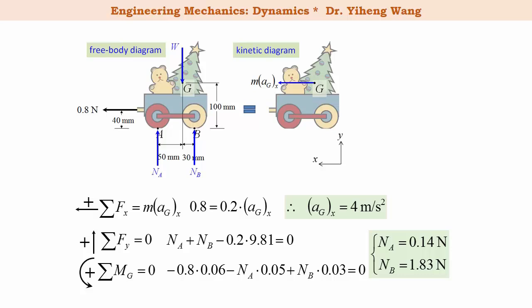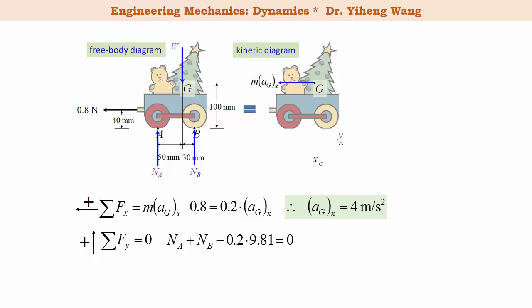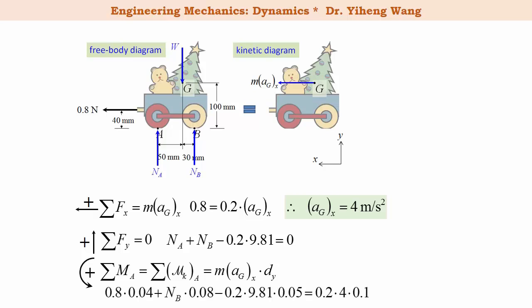Let's also try an alternative approach. We write the first two equations the same way, but for the third equation, instead of summarizing the moment about G, we summarize the moment about point A. That equals the kinetic moment about point A, calculated as the moment caused by the inertia force MaGx, which has already been solved. The advantage is that the resultant moment about point A does not include the unknown force NA, since NA's line of action passes through point A. Therefore this equation has only one unknown, NB, which we can solve directly. We then substitute NB into the second equation to solve for NA, getting exactly the same results as the previous approach.